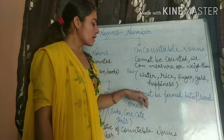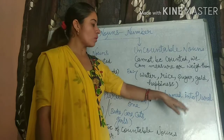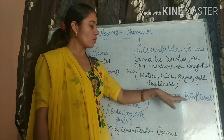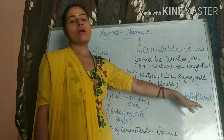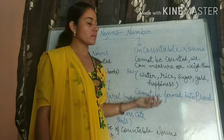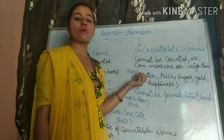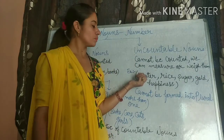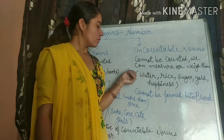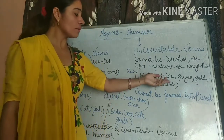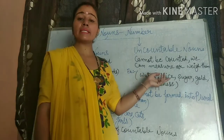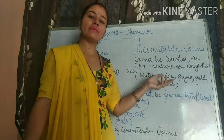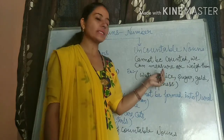Come to the next. Uncountable noun cannot be formed into plural. Hum isko plural form mein nahi bana sakte. Jaise 'water' — hum 'waters' nahi keh sakte. We can say only 'water.' Here we can say 'one kg rice.' We can't say 'rices.' Only we say 'one kg rice.'